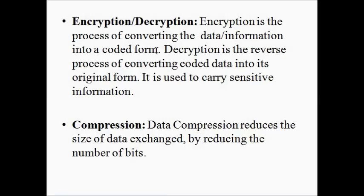The next feature is encryption and decryption, which generally involves converting simple data into a coded form to maintain secrecy. This is done when sharing sensitive or confidential information over the internet. Encryption converts simple data into coded form; decryption performs the reverse — converting the code back into original data. The code used is called a cipher, which is part of the broader subject of cryptography. The presentation layer performs both encryption and decryption.